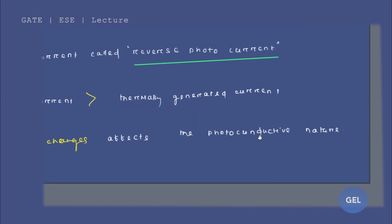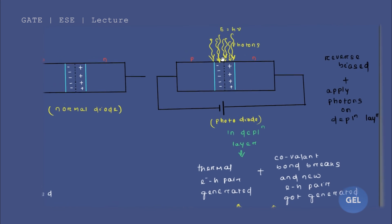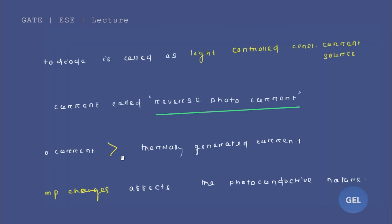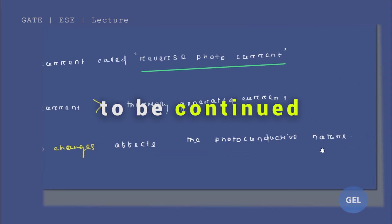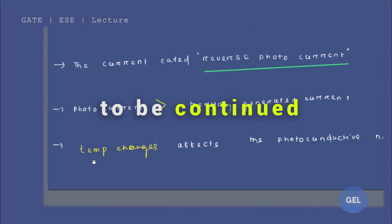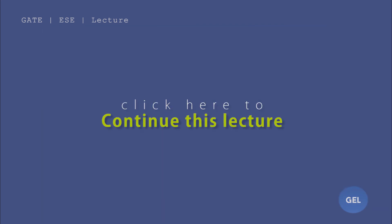All of what we have discussed — controlling the conductive nature of the diode by applying photons and light energy — comes under the photoconductive nature of the diode. This photoconductive nature of the diode gets affected by varying temperature. If you vary the temperature, it will definitely affect the photoconductive nature.